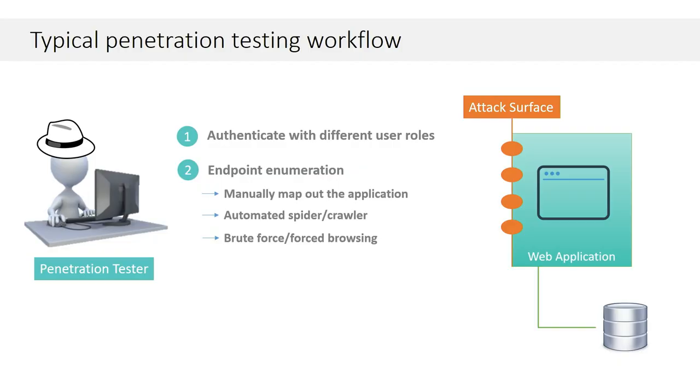From this endpoint enumeration process, out pops the attack surface — how an attacker can get into the application to reach the sensitive data you're trying to protect. Once the attack surface is identified, you can go through the vulnerability discovery process doing passive, active, or fuzzing testing.